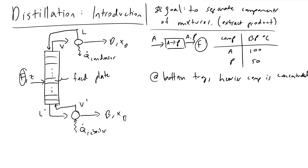At the bottom tray we have a reboiler — in practice this would be a copper coil heated by electric current or perhaps burning methane. The point is we are supplying heat into the bottom plate. As we heat the mixture that just entered the bottom tray, some of it vaporizes. The part that vaporizes is going to have more of the lighter component in it, though some heavy component will also be present. This vapor phase V' goes back up into the distillation column.